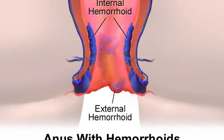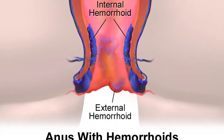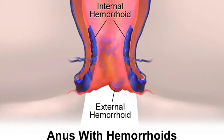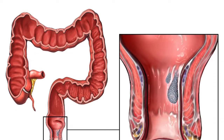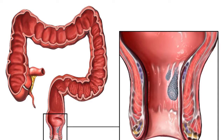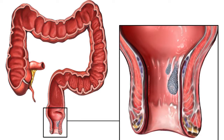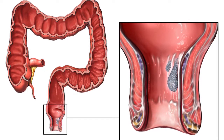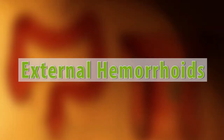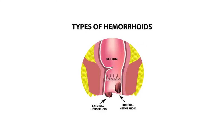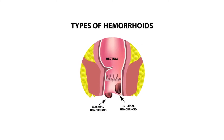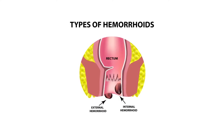Internal hemorrhoids sit inside the lining of the rectum and are not obvious unless they are substantially enlarged, in which case they can be felt. Internal hemorrhoids are usually painless and become apparent because they cause rectal bleeding with a bowel movement.